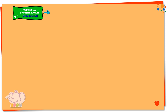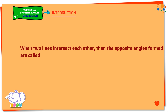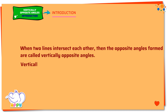Vertically opposite angles: when two lines intersect each other, the opposite angles formed are called vertically opposite angles. Vertically opposite angles are always equal.